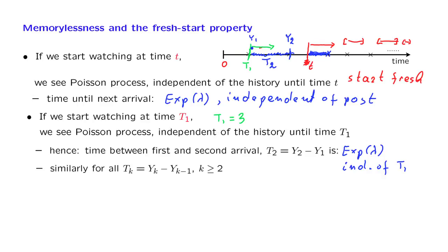So the second inter-arrival time is a random variable that has an exponential distribution, the same distribution as that of T1, and is independent from T1. Now we can extend this argument and look at the kth inter-arrival time. If the arrival number k-1 occurred here and the kth arrival occurs here, this difference we denote by Tk. By arguing in a similar way that the process starts fresh at this time, the time until the next arrival will also be an exponential random variable with the same distribution, and furthermore will be independent from the past history, and therefore independent from the earlier inter-arrival times.